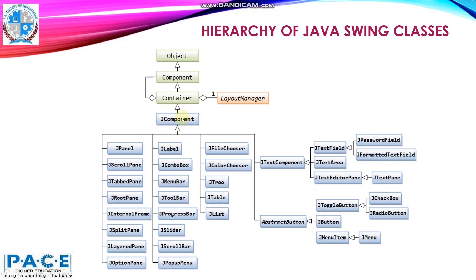Some examples of the lightweight component classes are JPanel, JScrollPane, JTabbedPane, JRootPane, JInternalFrame, JSplitPane, JLayeredPane, JOptionPane, JLabel, JComboBox, JMenuBar, JToolBar, JProgressBar, JSlider, JScrollBar, JPopupMenu, JFileChooser, JColorChooser, JTree, JTable, JList.